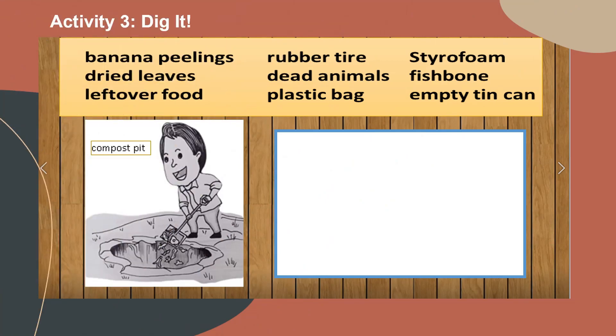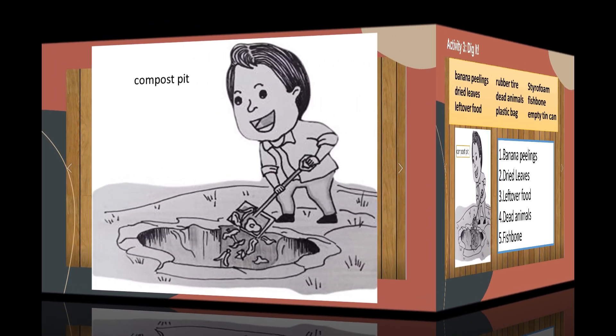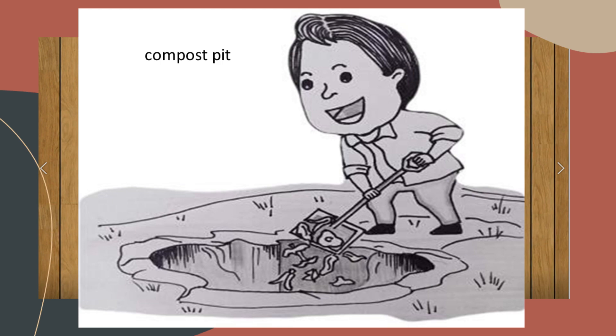For activity 3, dig it. Pick the materials inside the box that decay. These are used by farmers in making organic fertilizer to enrich the soil for planting. Write your answer on the blank provided. A compost is usually made by gathering decaying materials in a pile or bin and letting them decompose as a result of the action of microorganisms such as bacteria and fungi.